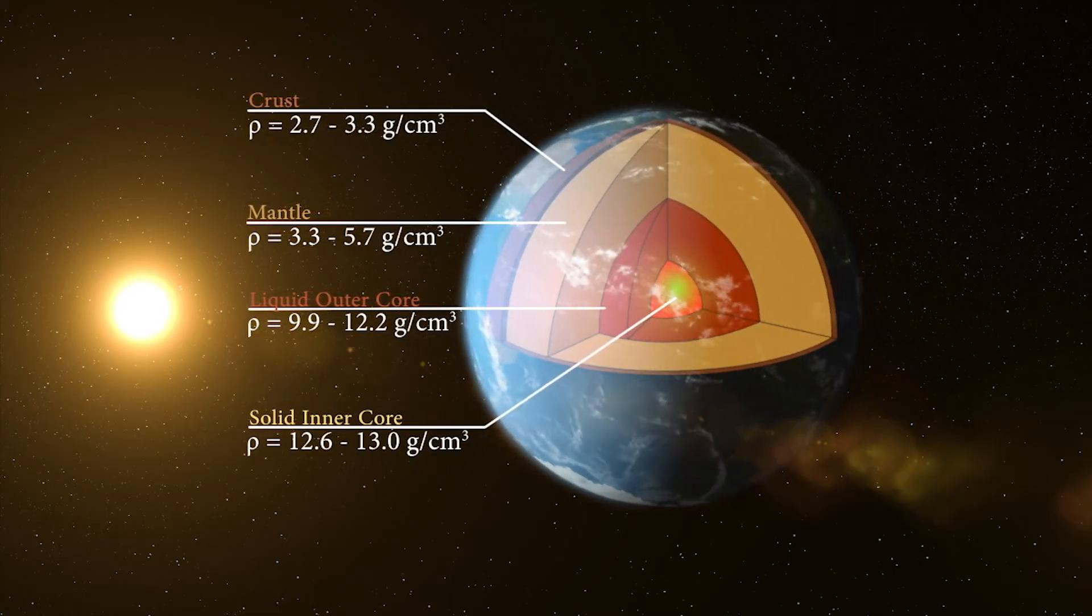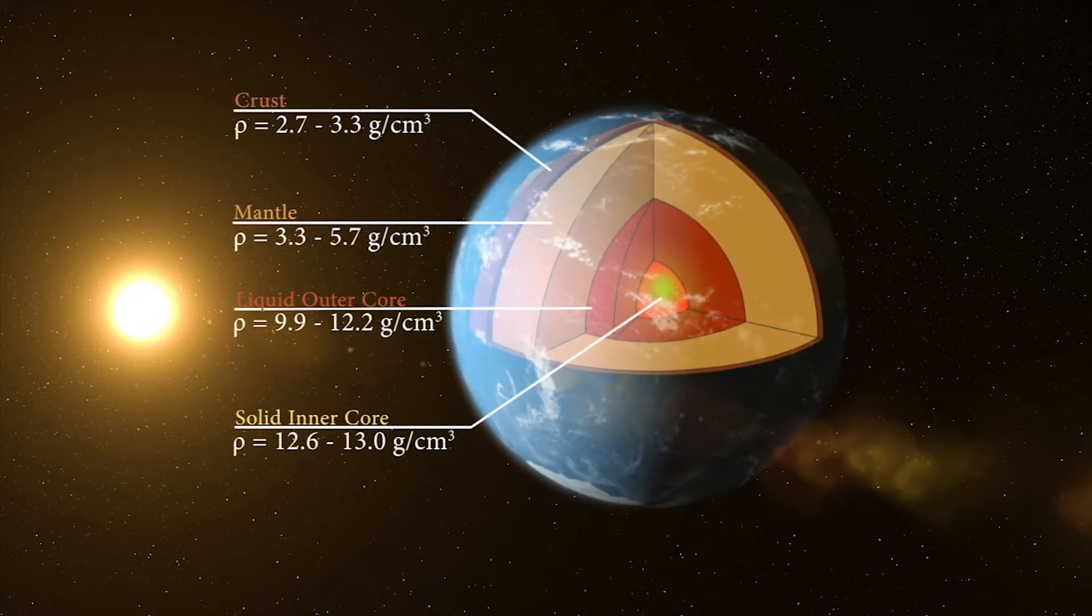We believe that Earth and other terrestrial planets were able to differentiate because their interiors were once molten.